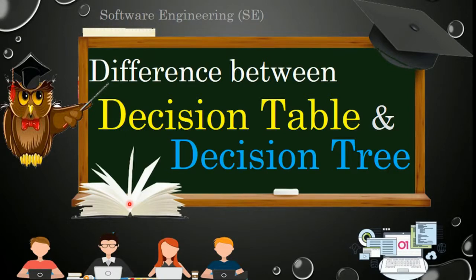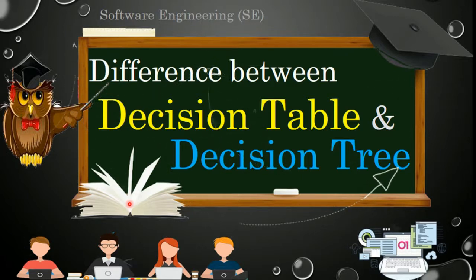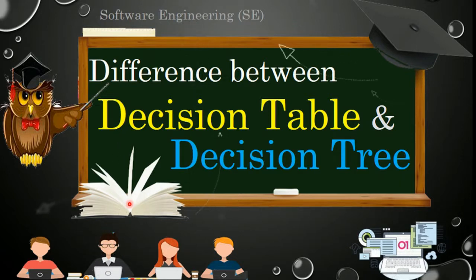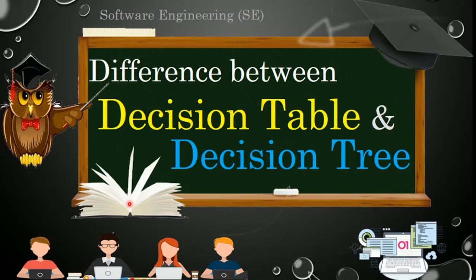Decision table and decision tree are both used to represent complex decisions and the corresponding actions to be performed on the basis of those decisions. In this video we are going to learn about the major differences between the decision table and the decision tree.